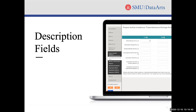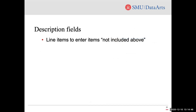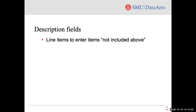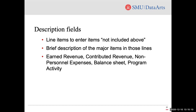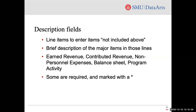The second type of narrative field we'll mention today is the description fields. Throughout the survey, there are line items at the bottom of each section where you can enter anything not included above. These line items may be used more than ever since we have removed some of the details in the survey. For each of these lines, there will also be a place to enter brief descriptions of the major items in those lines. These description lines appear in earned revenue, contributed revenue, non-personnel expenses, balance sheet, and program activity. Some are even required if you have filled out the line they are describing, and if they're required, they'll be marked with an asterisk.